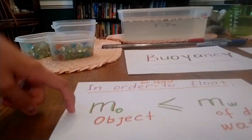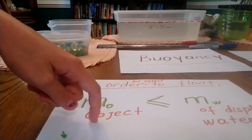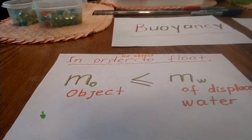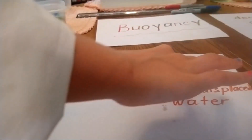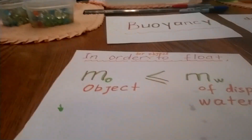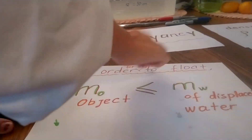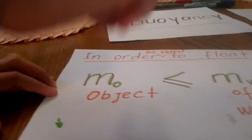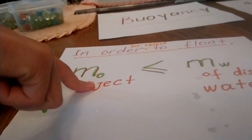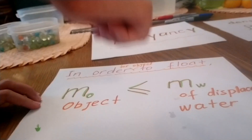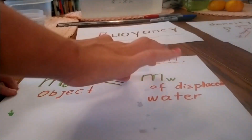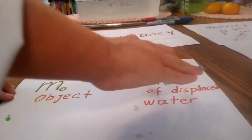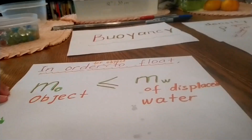So the mass of the object is less than or equal to the mass of the displaced water. In order for the object to float, the mass has to be less than or equal to the mass of the displaced water.